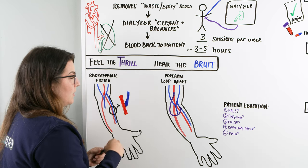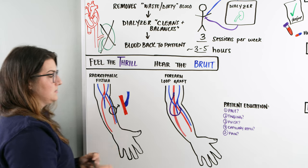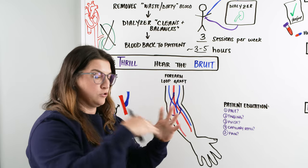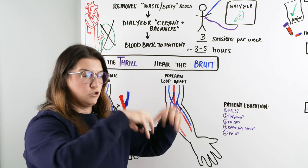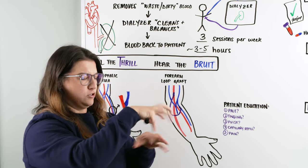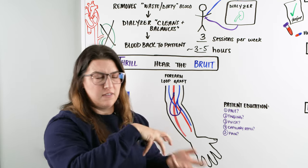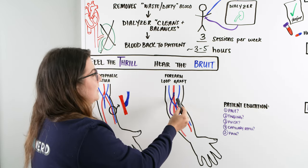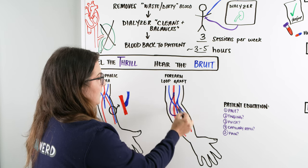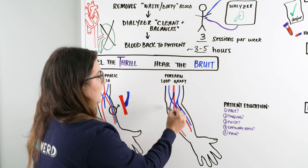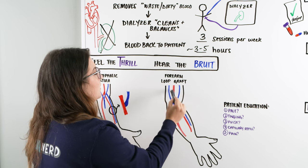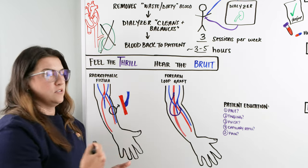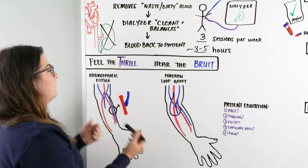With a fistula, there's a lot of turbulence where the artery and vein meet. I like to picture it as an ocean meeting a river — the ocean crashing onto the beach while the river flows in — lots of movement and turbulence. With a loop graft, we take a graft and connect an artery and vein using a synthetic vessel, creating another access point for hemodialysis.